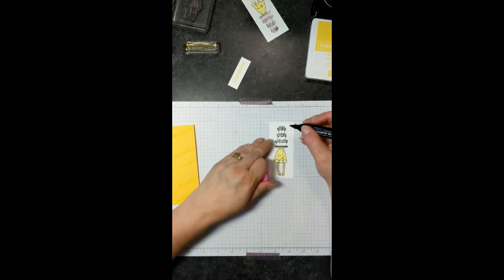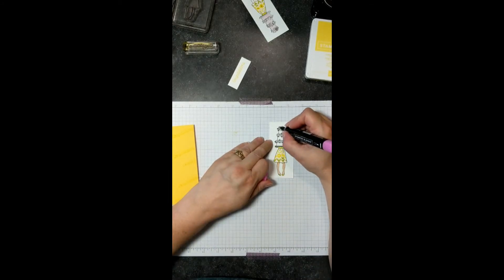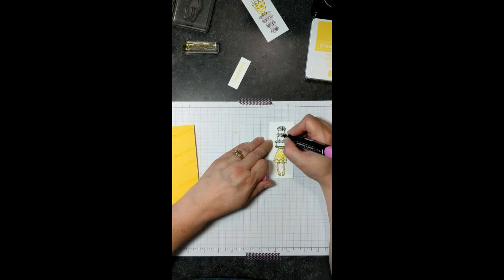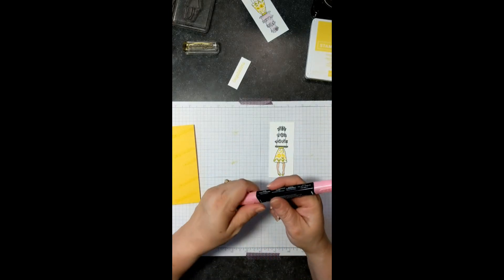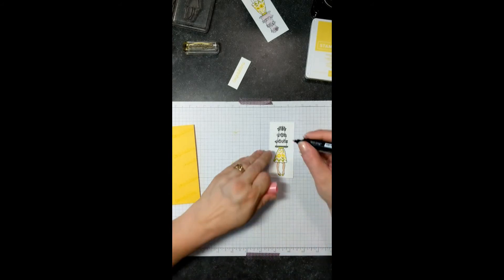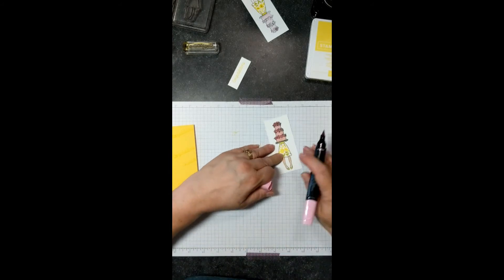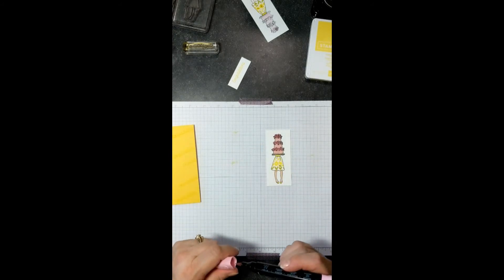Then we'll come in and color our flowers with some different colors. Again, do your cake based on, you know, what the theme is or just what you like. I'm doing pink because that was the color of the cake for the wedding that this card is going to be given. Alright, and there is our girl holding the cake.